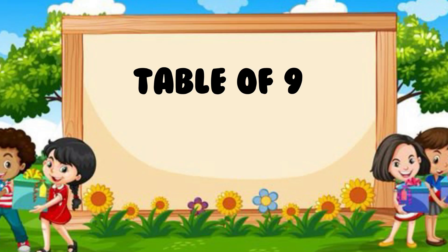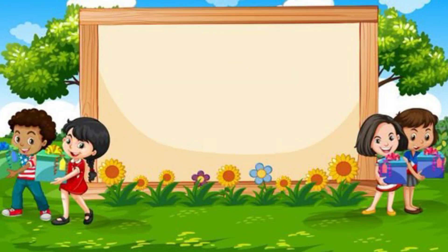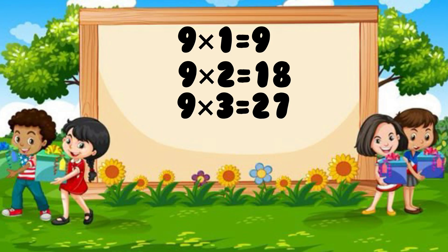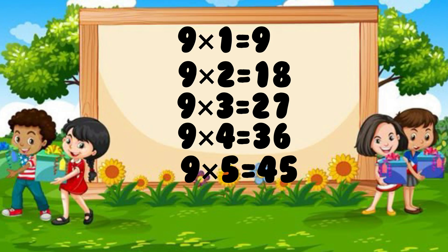Table of Nine. 9 ones are 9. 9 twos are 18. 9 threes are 27. 9 fours are 36. 9 fives are 45.